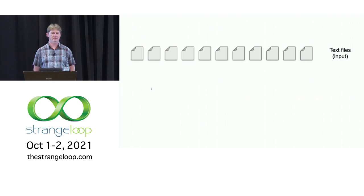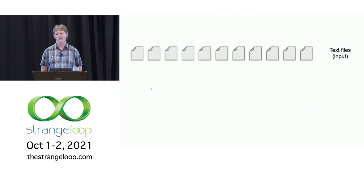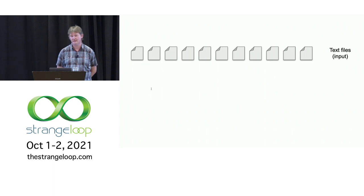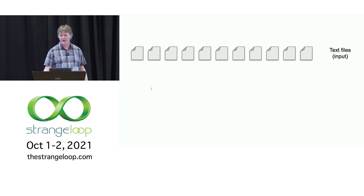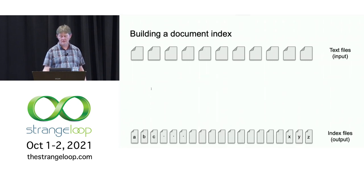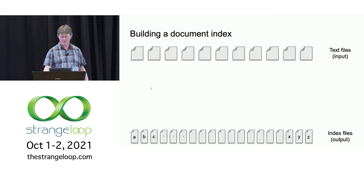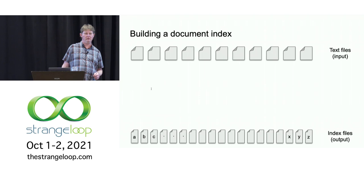Imagine that you need to index the web, or you have a million documents you would like to build a text index on. Here are the files. What you want to do is break them into individual words. And for each particular word, you want to build an index that contains all the document IDs that contain that word. Or, to simplify a little, maybe you just want to count the number of occurrences of the words in all those documents.